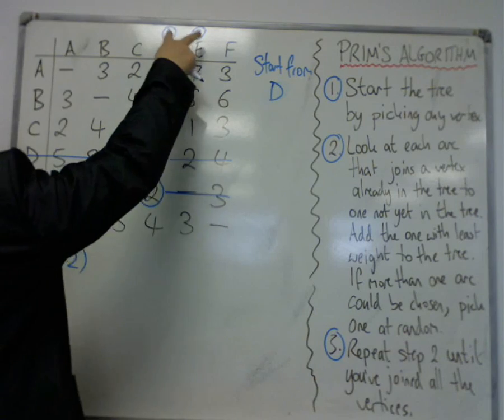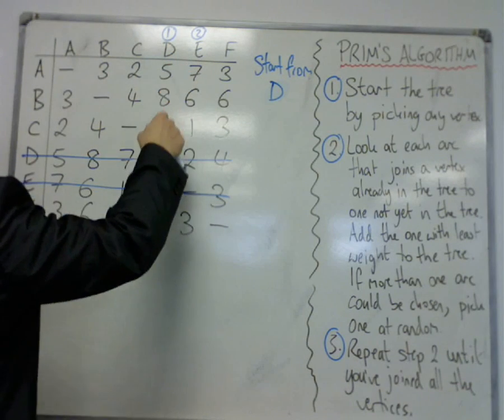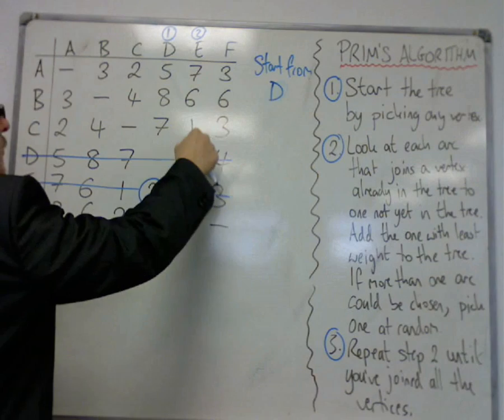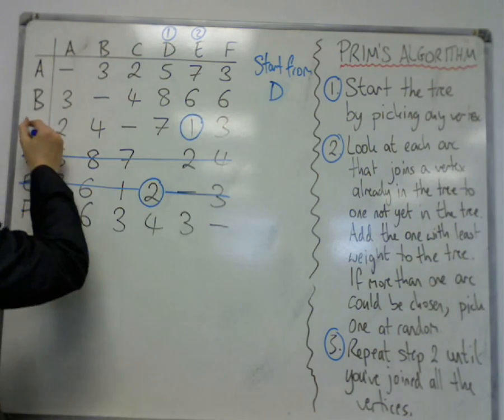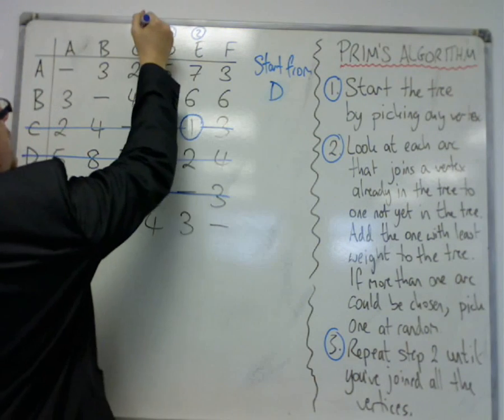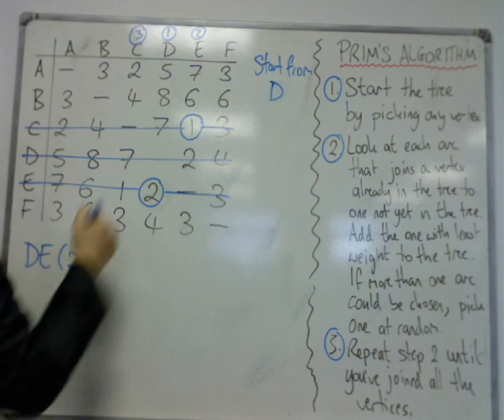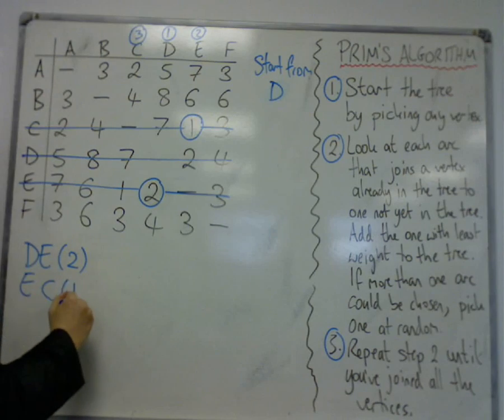Then I'm looking down both D and E. I've got 5, 8, 7, 4, 7, 6, 1, and 3. So the shortest of those is the 1, so that connects E to C. So E to C, 1.